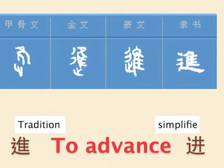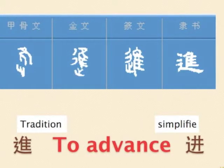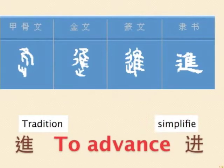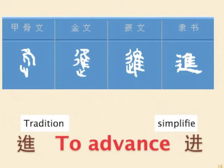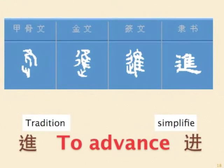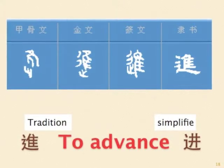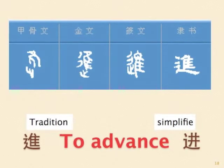Next word: to advance. The ancient script shows a foot following a bird, meaning walking and advancing. The traditional form complicates it with more strokes. The simplified form replaces the bird part with the word 'jǐn' (whale), because its pronunciation is similar to the word for 'to advance'.